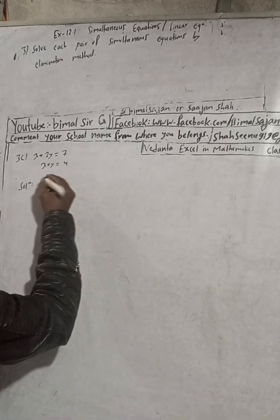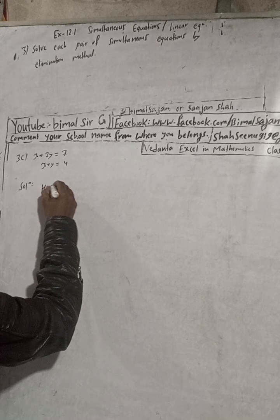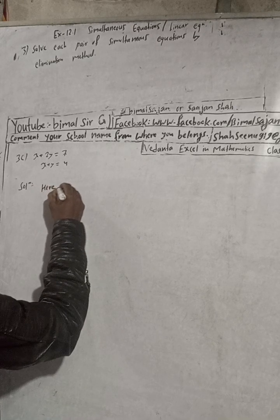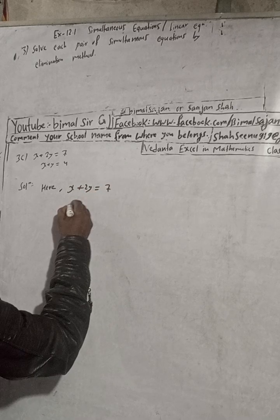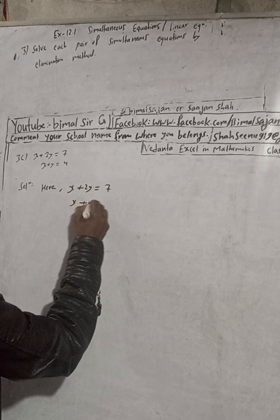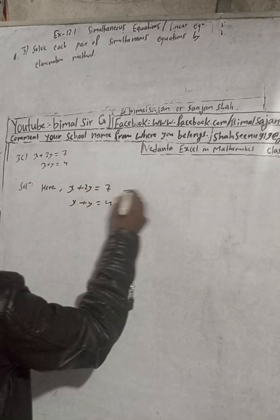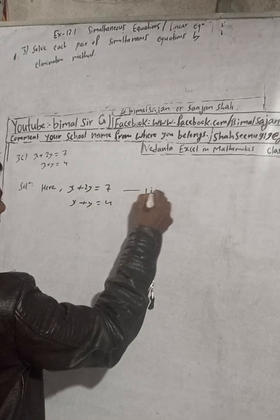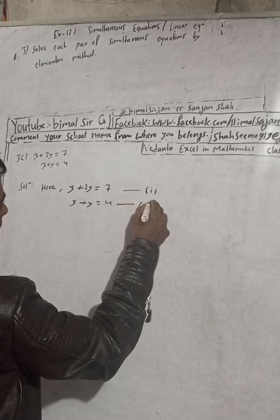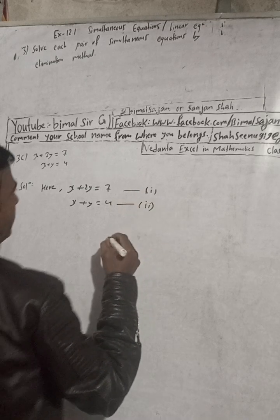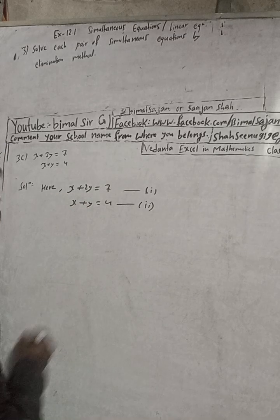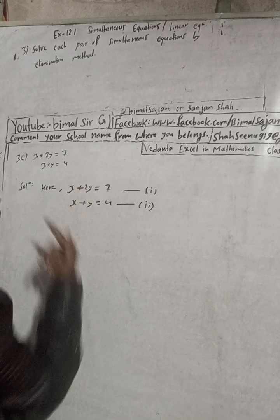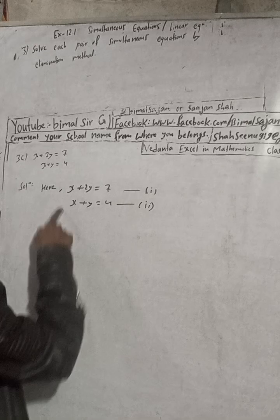The equations are: equation 1 is 2x plus 2y is equal to 7, and equation 2 is x plus y is equal to 4. Now, if we add, we cannot eliminate, so we will subtract.